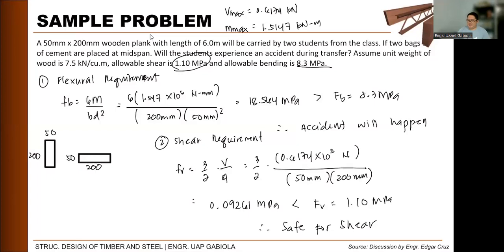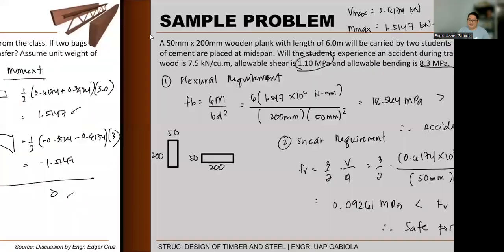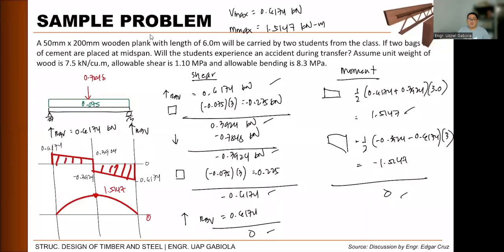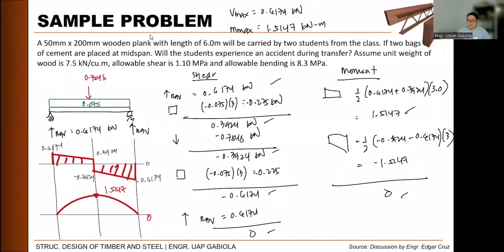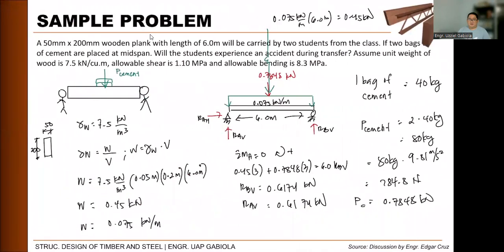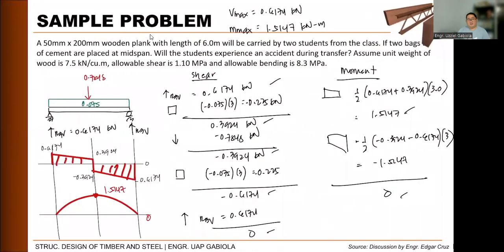The solution is somewhat lengthy because we need to calculate maximum shear and moment. There are standard tables for maximum moment and shear depending on loading condition, which can be used to skip the full shear-and-moment diagram derivation. Let us now proceed to the second example.